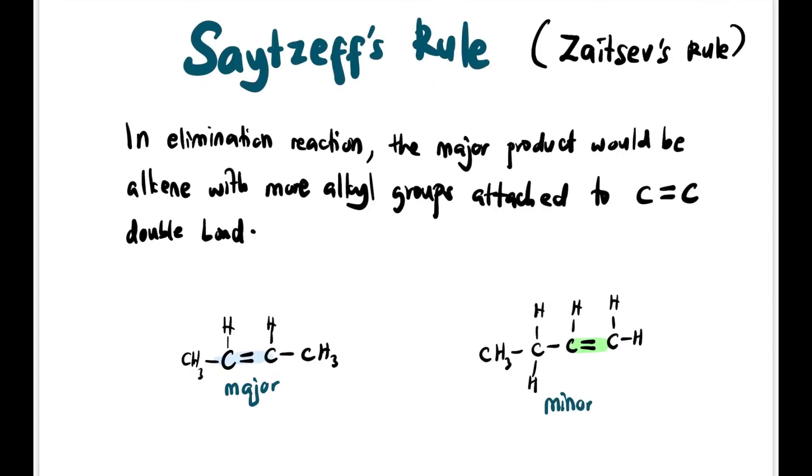Actually there's a rule we use called Saytzeff's rule or Zaitsev's rule - a Russian name. In elimination reaction, the major product would be the alkene with more alkyl groups attached to the carbon-carbon double bond. That's what Saytzeff's rule says. If we compare the two products, why is the left one major? This is the carbon-carbon double bond. On the left there's one CH3, on the right one CH3, so in total it has two alkyl groups - two R groups.